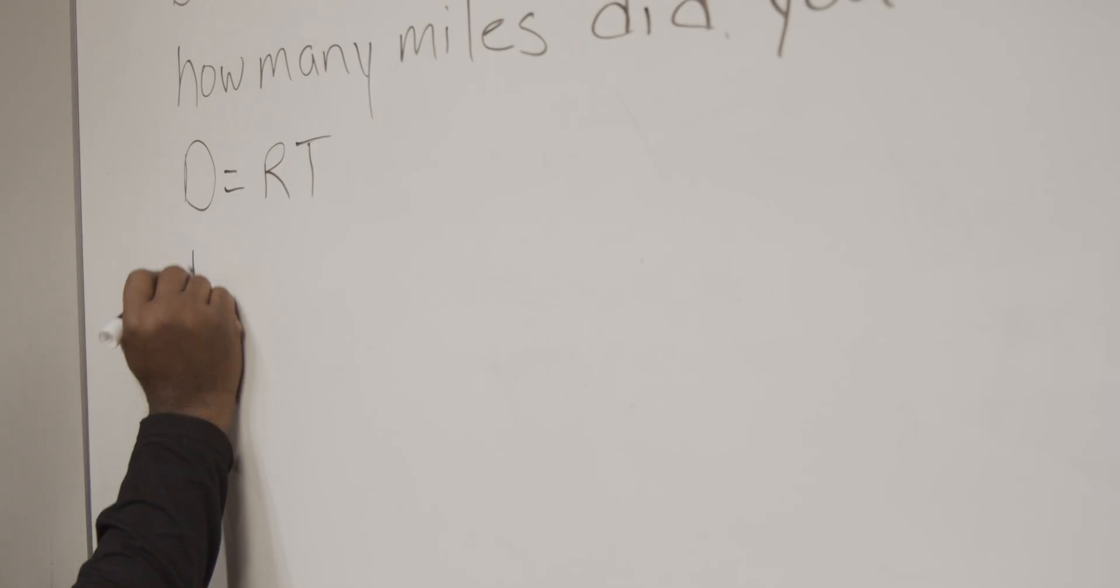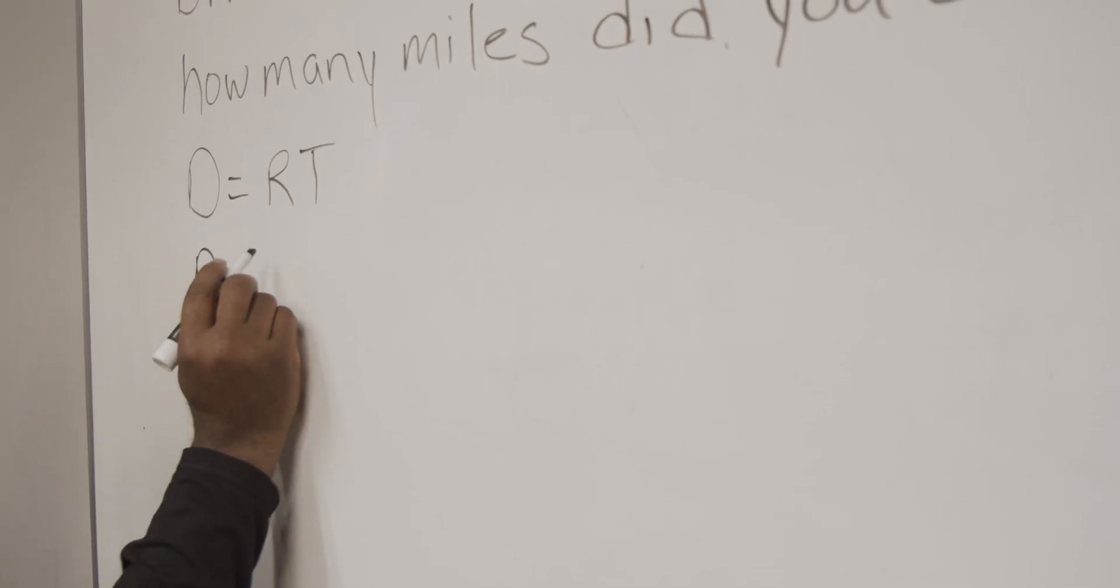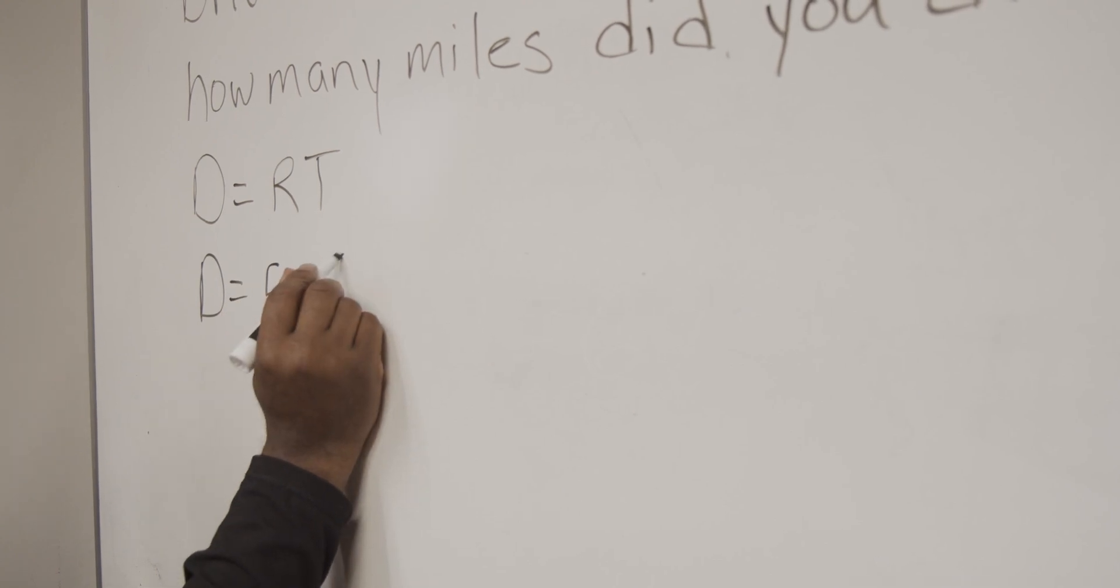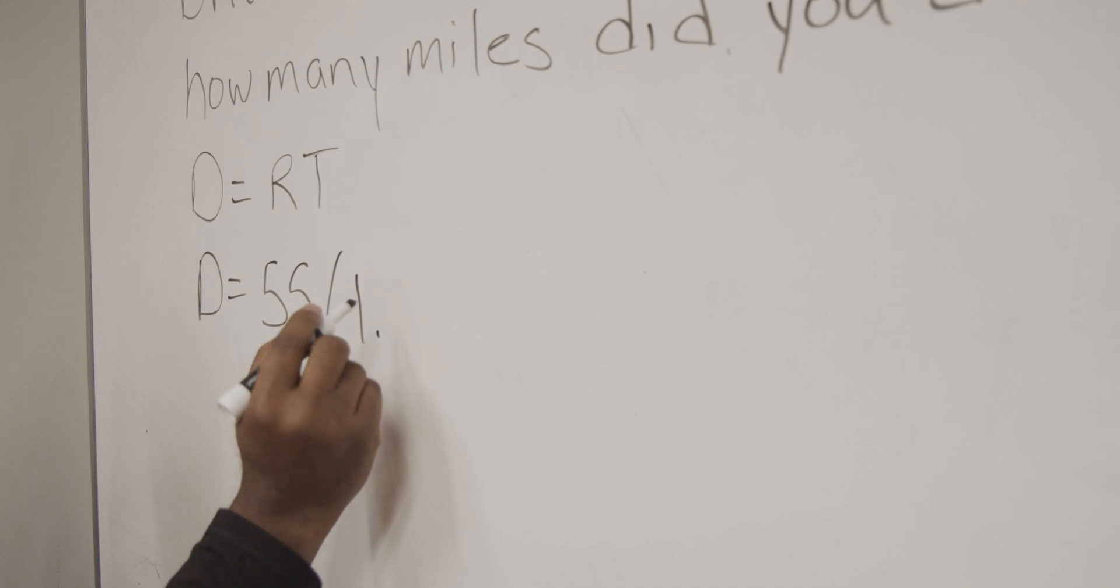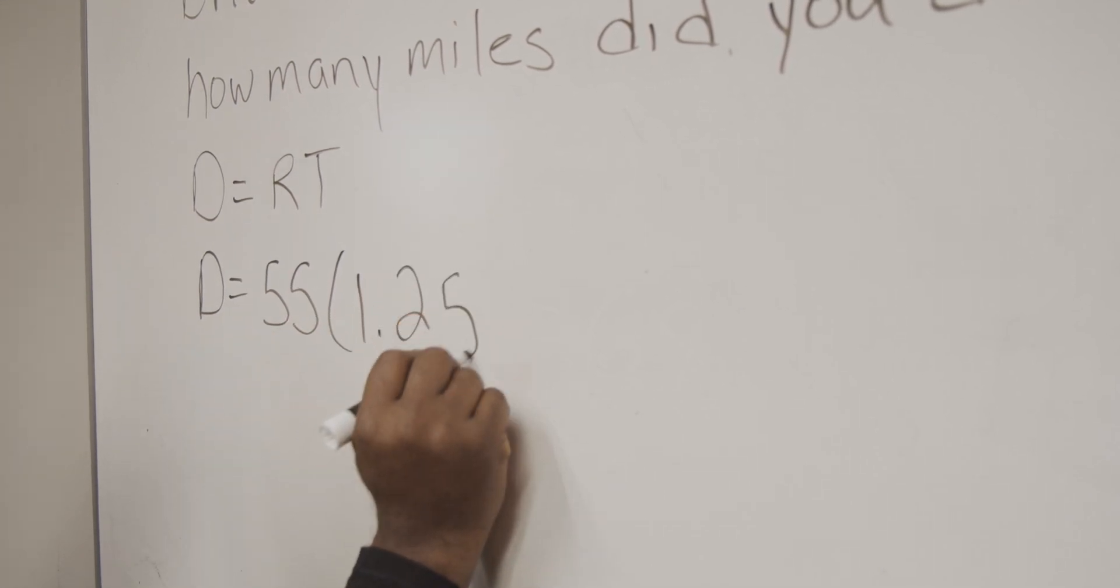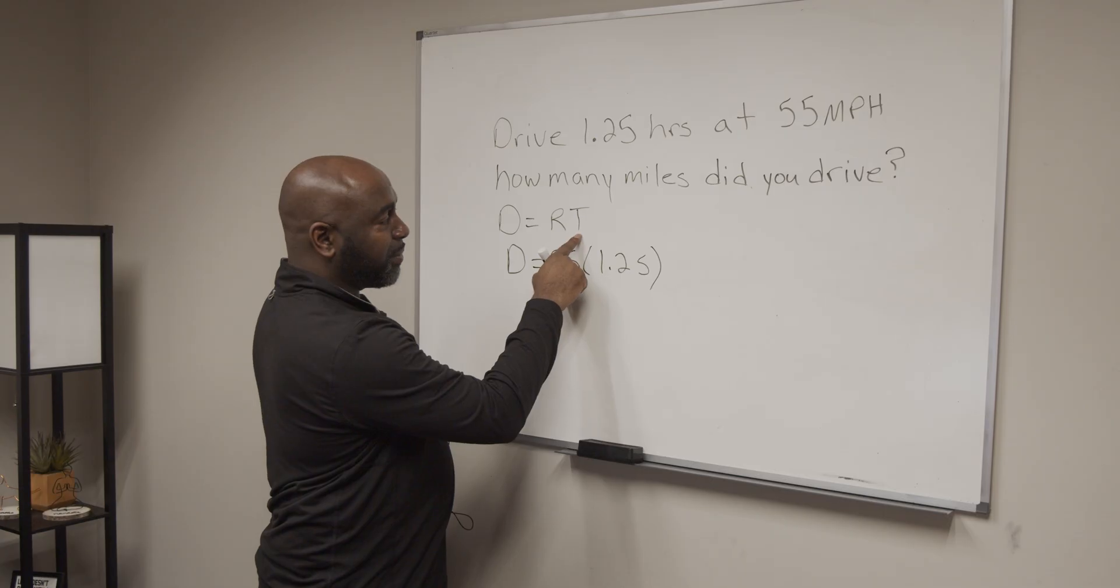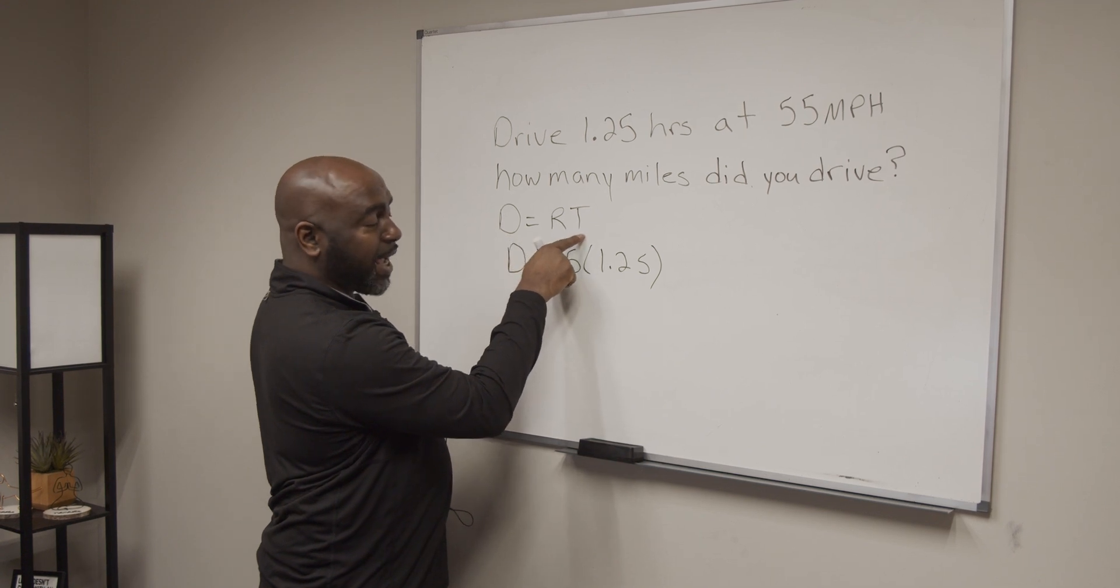So let's get into it. We have distance equals 55, because that's our miles per hour, that's our rate, times 1.25, which is our time. So it's distance equals rate times time.